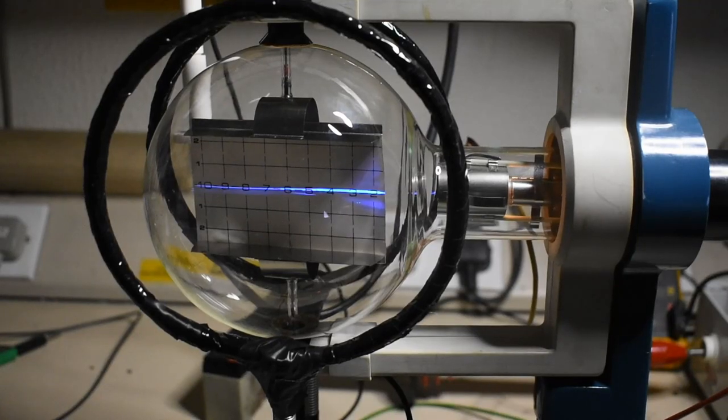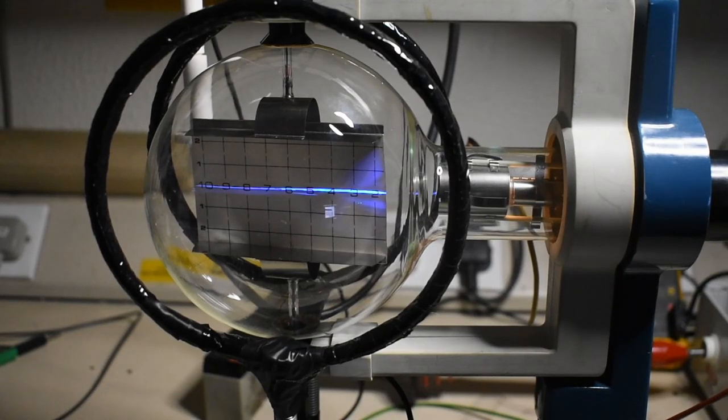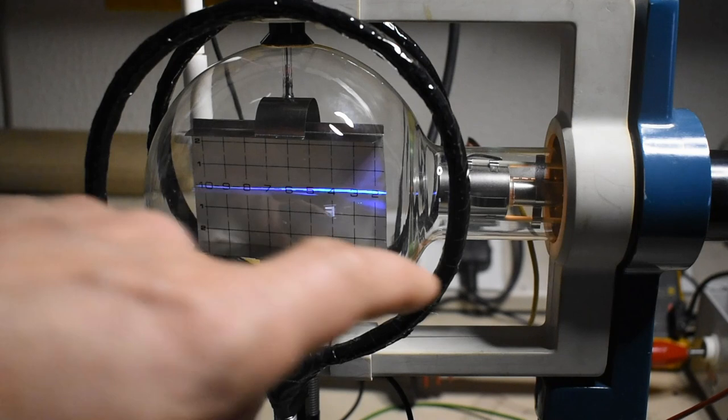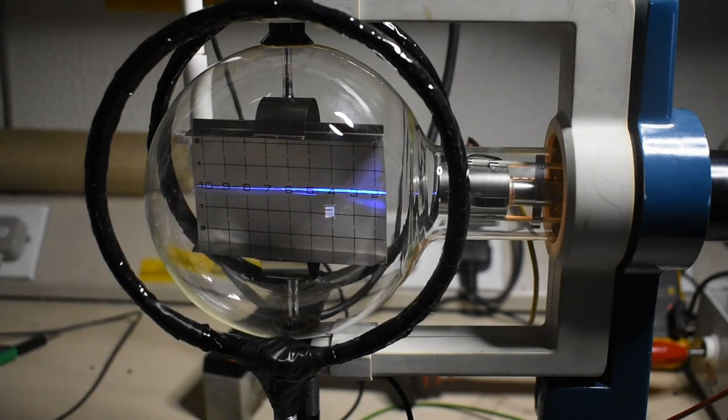As you see, with the lighting down, we now have a straight-through electron beam travelling across the fluorescent plate at the back there.